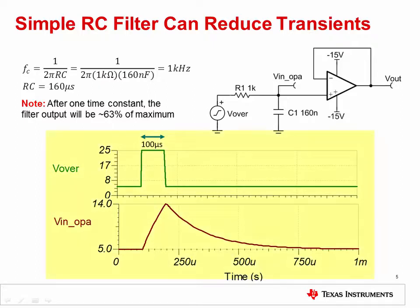The effect of the RC circuit on an overvoltage pulse can be seen in this simulation example. The pulse is 25 volts high and 100 microseconds wide. 100 microseconds is less than one time constant, so the pulse will not even reach 63% of its maximum value. Looking at the transient simulation, the op amp's input voltage is limited to a safe level of 14 volts. Of course, the effectiveness of this method depends on the bandwidth of the circuit and the magnitude and timing of the overvoltage pulse.